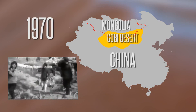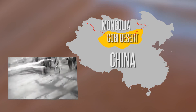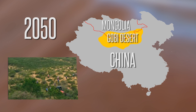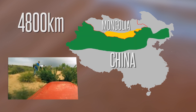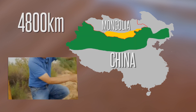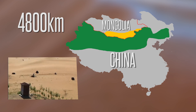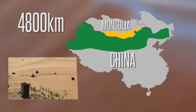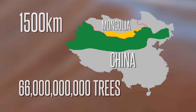It started in 1970 and is planned to finish by 2050. This afforestation zone spans across 4,800 kilometers from the northwest to northeast of China, across the Sino-Mongolian borders. It is 1,500 kilometers wide, planting a staggering 66 billion trees.